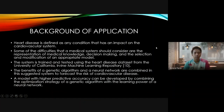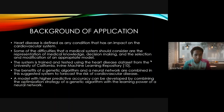This is the background of the application. Heart disease is defined as any condition that has an impact on the cardiovascular system. Some of the difficulties that a medical system should consider are the representation of medical knowledge, decision making, and the selection and modification of an appropriate model. The system is trained and tested using the heart disease dataset from the University of California Irvine Machine Learning Repository. The benefit of a genetic algorithm and a neural network are combined in the suggested system to forecast the risk of cardiovascular disease.